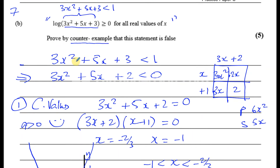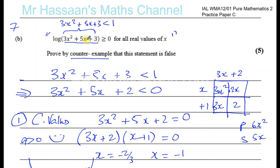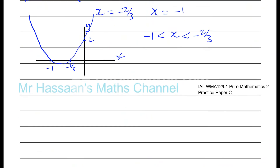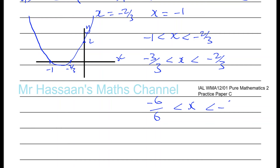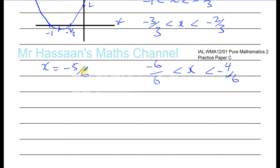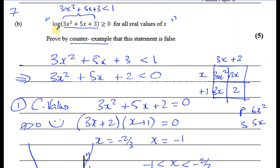If it makes this less than 0, then it makes 3x² + 5x + 3 less than 1, which will give a negative log value and prove the statement false. We need any value between -1 and -2/3. Converting to sixths: -1 is -6/6 and -2/3 is -4/6, so exactly halfway between them is x = -5/6.